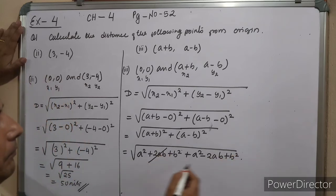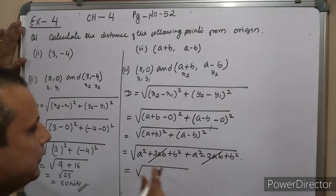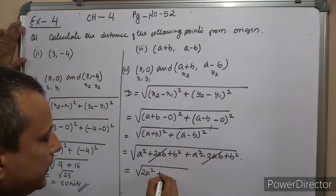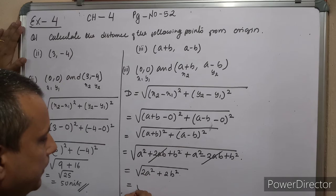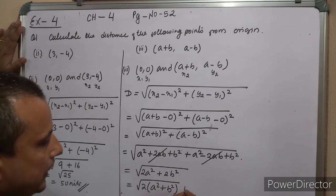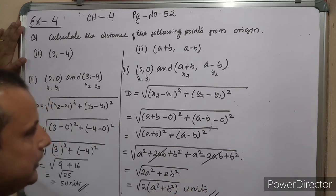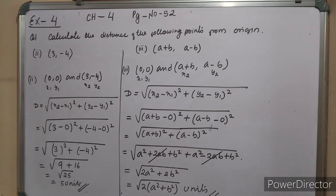Plus 2ab and minus 2ab cancel. So we have square root of (a squared plus a squared is 2a squared, plus b squared plus b squared is 2b squared). Factor out 2: square root of 2 times (a squared plus b squared). The distance from the origin is square root of 2(a squared plus b squared) units.